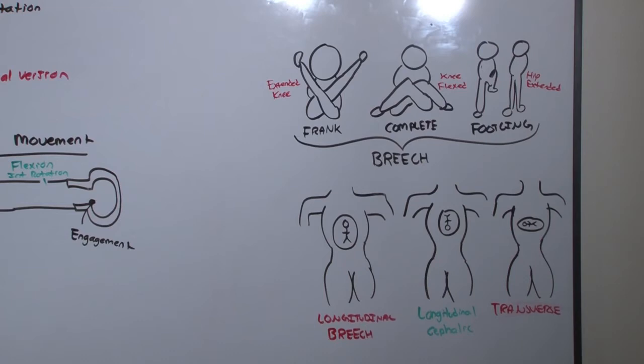In frank breech, the knees are extended. In complete breech, the knees are flexed. In both frank and complete, the hips are flexed. In footling breech, one or both of the hips are extended, and what you'll see is a foot exiting the cervical canal.